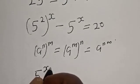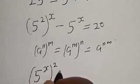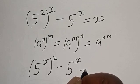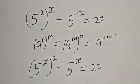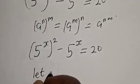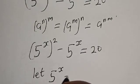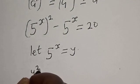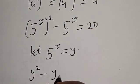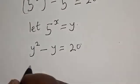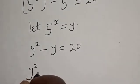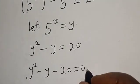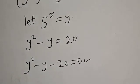We get 5 raised to power 2x minus 5 raised to power x is equal to 20. Let 5 raised to power x equal y. Substituting, we get y squared minus y minus 20 equals zero. This is a quadratic equation.